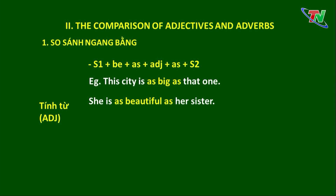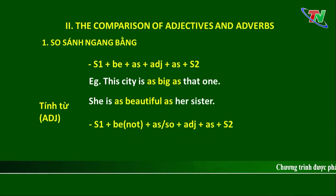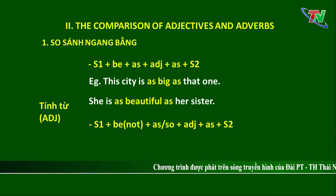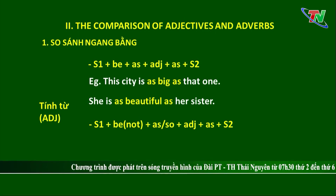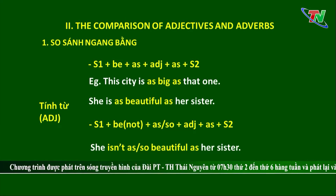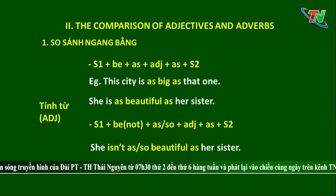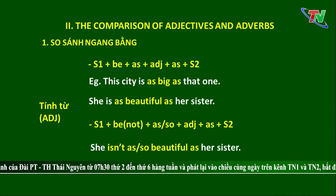Ở dạng phủ định của so sánh ngang bằng, cô giáo sẽ sử dụng cấu trúc: Chủ ngữ 1 + be + not + as/so + tính từ + as + chủ ngữ 2. Ví dụ: She isn't as beautiful as her sister. Hoặc: She isn't so beautiful as her sister.